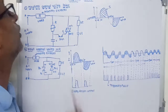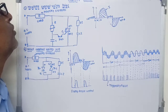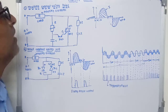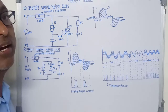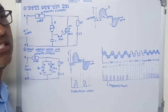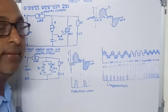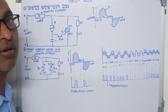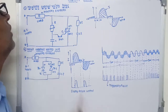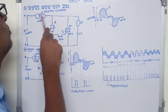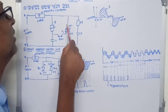Heating control using a TRIAC or SCR is used for the heating control of a furnace. When current passes through a resistance it produces heat, given by H = I²RT. The current passing through this element is changed by changing the firing angle of the TRIAC.